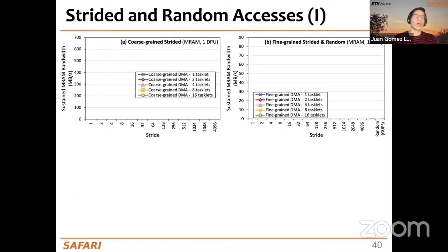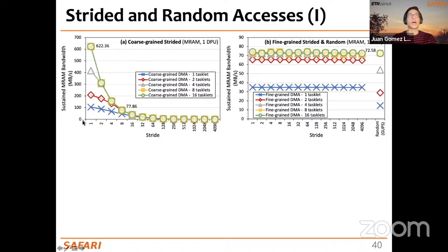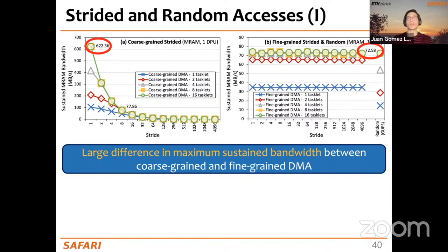Looking at the results: the Y-axis shows sustained MRAM bandwidth. The left-hand side shows coarse-grained strided access results, and the right-hand side shows fine-grained strided and random access results. Each curve corresponds to a different number of tasklets; the X-axis shows the stride. The right-most column shows results for the GUPS random access benchmark. A key observation is the large difference in maximum sustained bandwidth between coarse-grained and fine-grained DMA — coarse-grained uses 1024-byte transfers while fine-grained uses only 8-byte transfers.